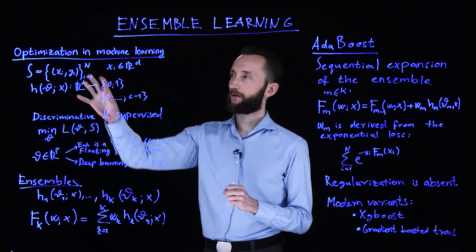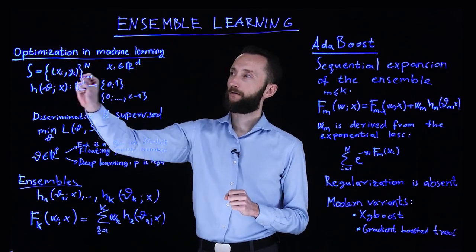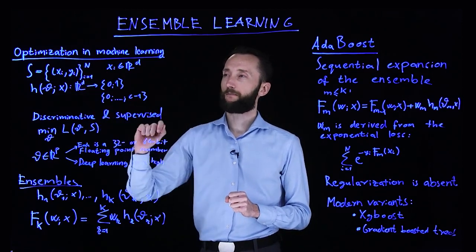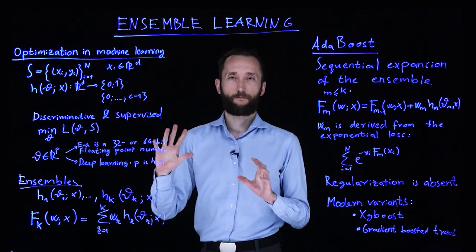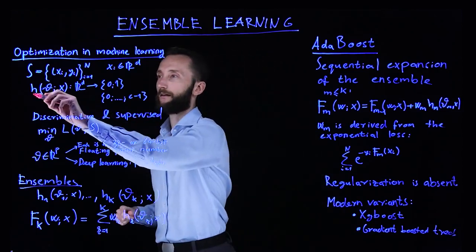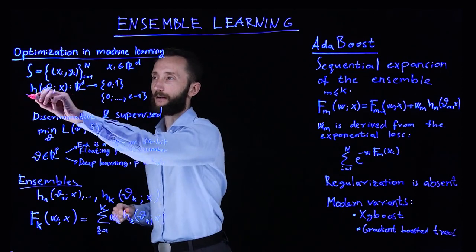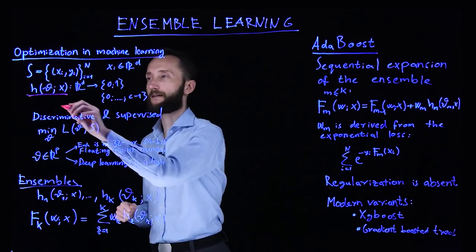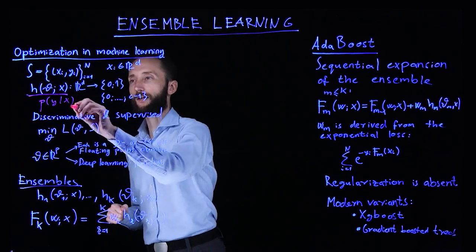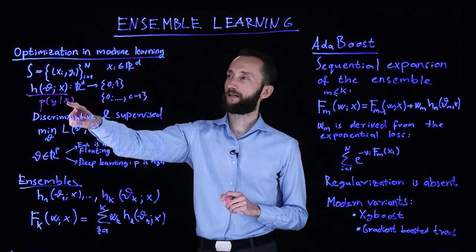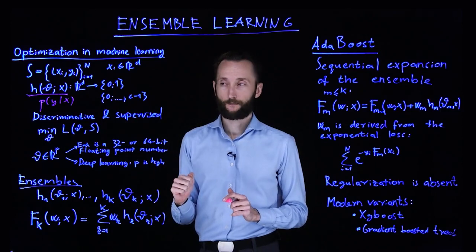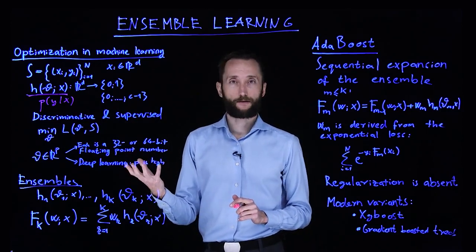In a typical scenario, you are given a sample — a couple of data points in some high-dimensional space, each coming with some label. Labels can be 0 or 1, or belonging to some finite many classes. What you are actually learning in the machine learning model that you are trying to fit to the data is a conditional probability distribution. You are trying to approximate, once you see a data instance of a certain form, what is the label that you should predict. This type of learning is discriminative and supervised.